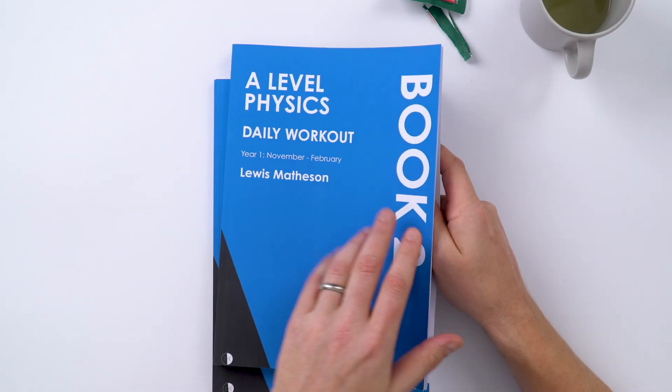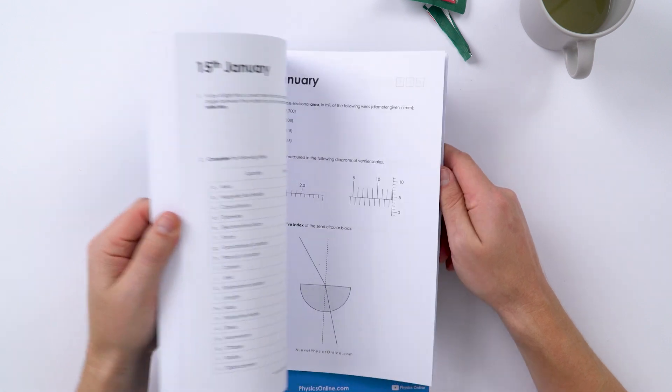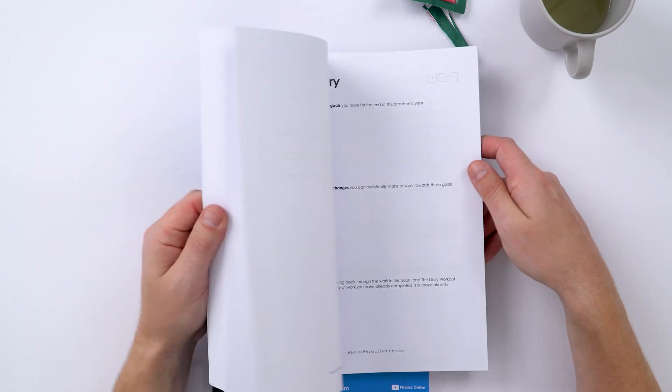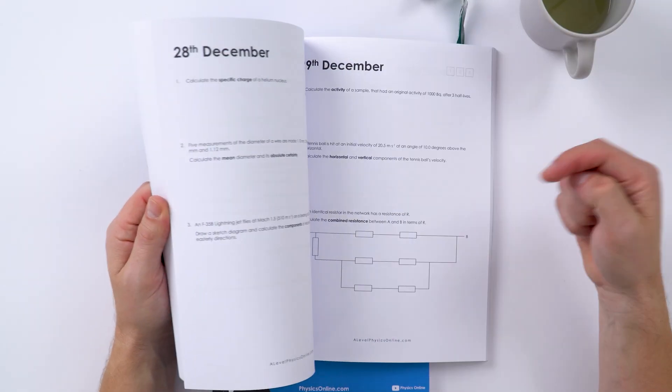So if you're in year 13, I recommend that you get book two and I reckon you could work through the whole thing in a couple of days. And I think as I flick through it, if you're doing A-level physics, you'll realize a lot of the topics that these questions are about.